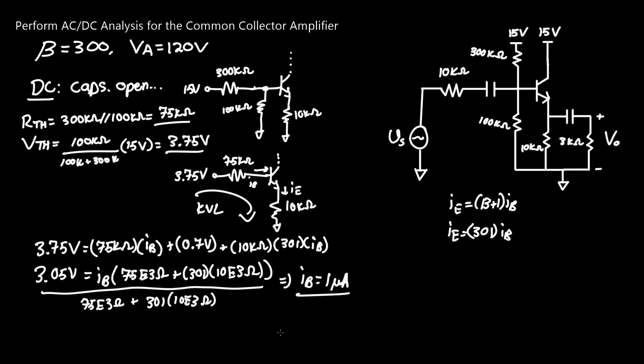However, we still need a few more to sufficiently perform AC analysis, that being Rpi for starters. Rpi equals Vt over IB, or Vt's thermal voltage of 26 millivolts over IB, which we just calculated to be 1E negative 6 amps. We find that Rpi equals 26 kilo ohms.